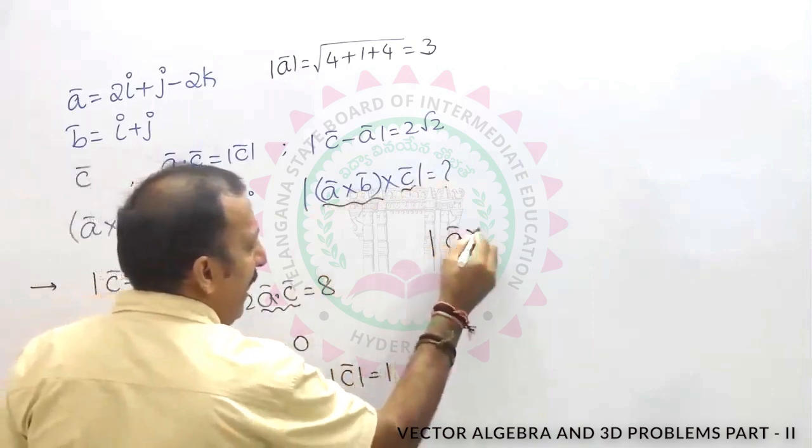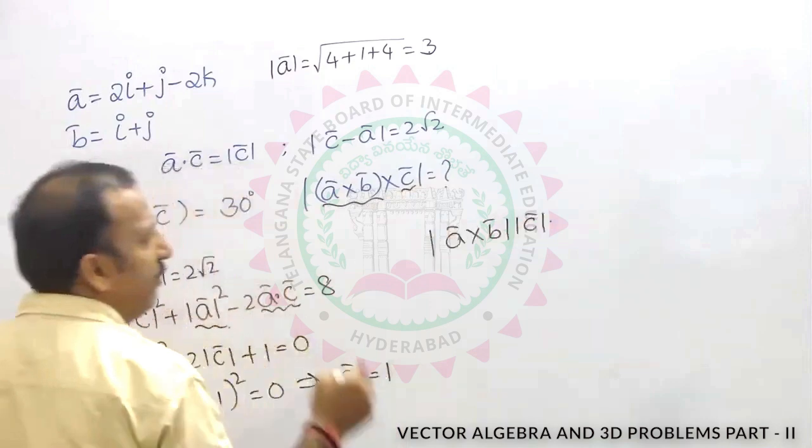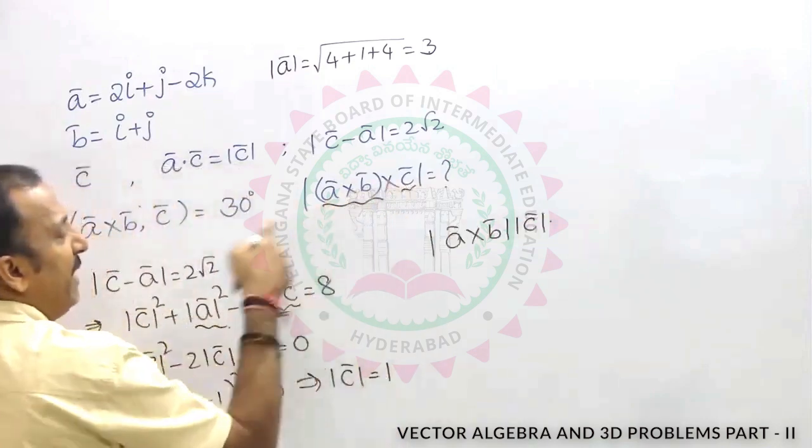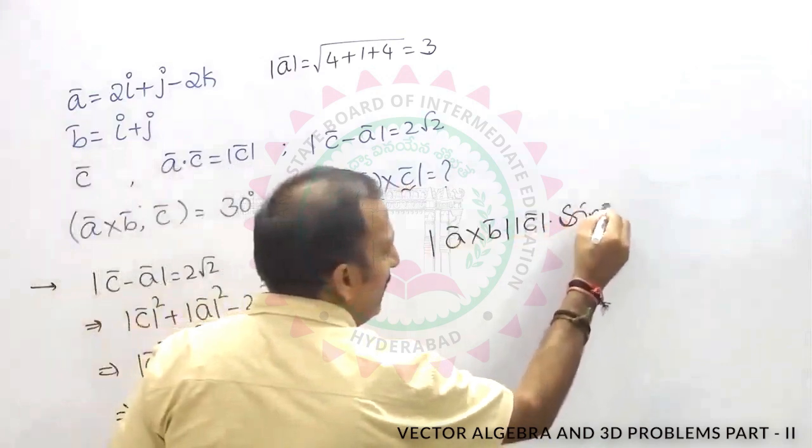So mod a cross b into mod c into, angle between a cross b and c bar is given, 30 degrees into sin 30 degrees.